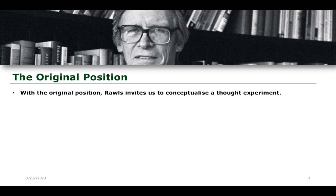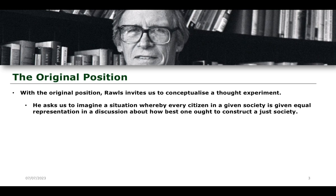With the original position, what Rawls is inviting us to do is to conceptualize a thought experiment. He's not saying that we're going to actually do this in the real world, because it's probably impossible to do. He asks us to imagine a situation whereby every single citizen in a society is given equal representation in a discussion about how one ought to construct a just society. In the writings themselves, he argues that this person is a representative of the person, not the actual person themselves. He says that we can construct a world where we have a big town hall meeting with every single person within the society, and every single person has equal representation — they all have an equal say in what is the best way to construct a just society.